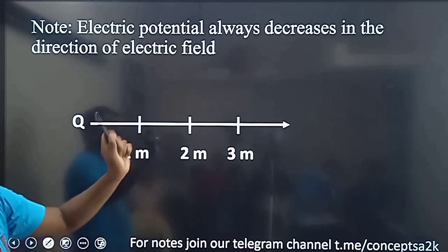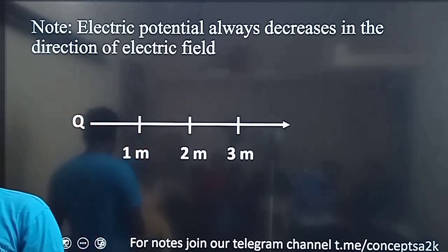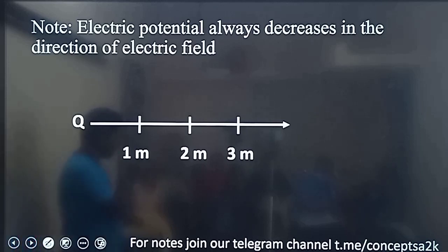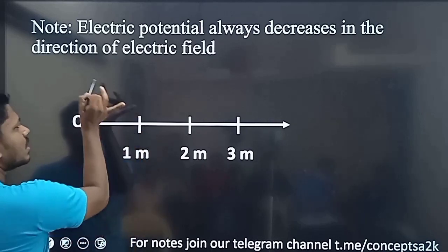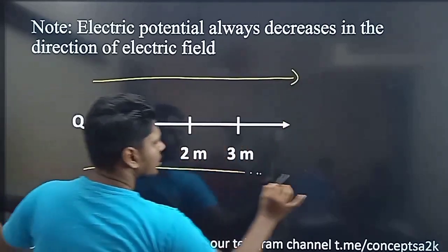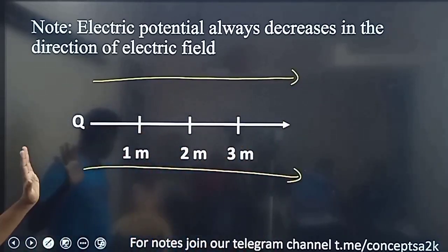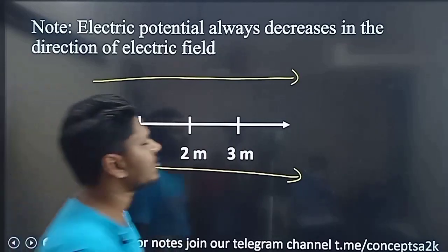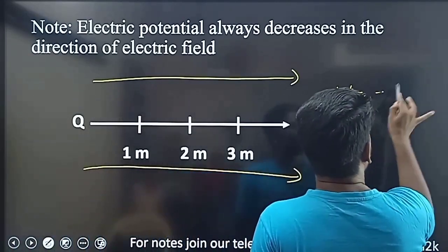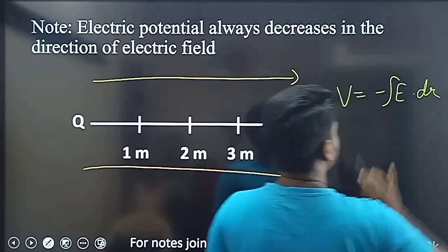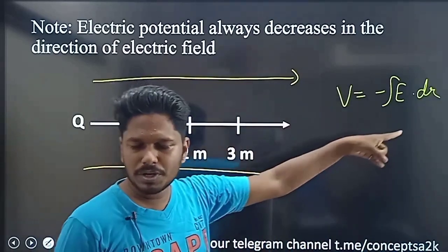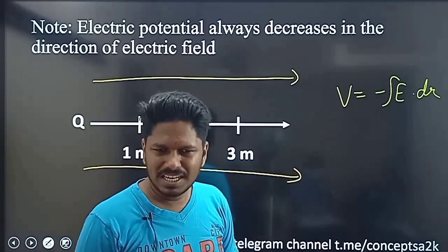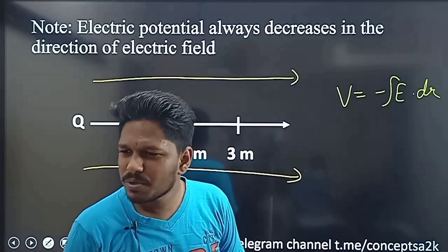Electric potential always decreases in the direction of electric field. Why is electric field? There is a charge, then electric field is in the direction of electric field. What is the formula? What is V? Minus integral of E dot dr. If you go in the direction of electric field, what is the potential — negative? Is it negative? No, that's good.